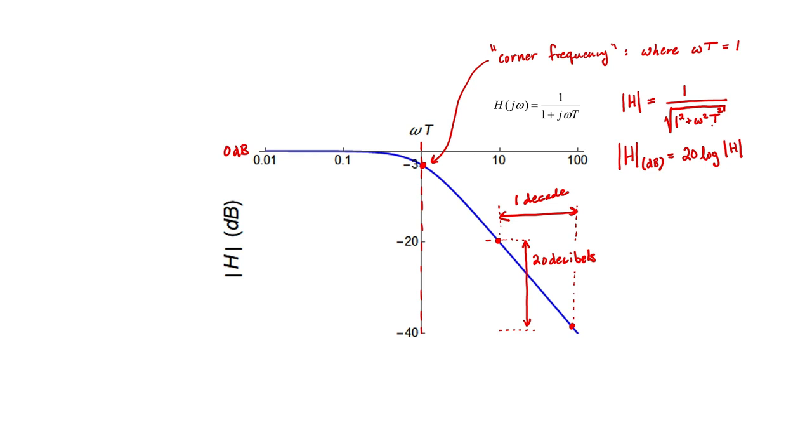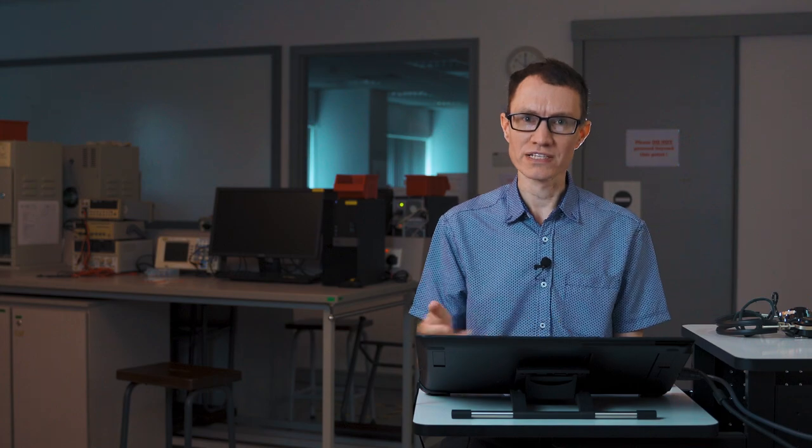A factor of two in terms of power corresponds to a three decibel change on the log scale. That's why it crosses the vertical line here at negative three decibels. Sometimes this is also called the characteristic frequency of the filter or the cutoff frequency of the filter. Along with corner frequency, there are a few different ways to refer to this.